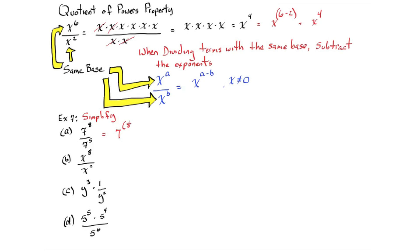7 to the 8th divided by 7 to the 5th is the same as 7 to the 8th minus 5, or 7 to the 3rd. In the third example, we have y to the 3rd times 1 over y to the 2nd, which can be rewritten as y to the 3rd over y to the 2nd, which is y to the 3 minus 2, or y to the 1st. In D, we can combine 5 to the 5th times 5 to the 4th as 5 to the 9th, and then we can subtract 9 minus 6 to simplify it to 5 to the 3rd.